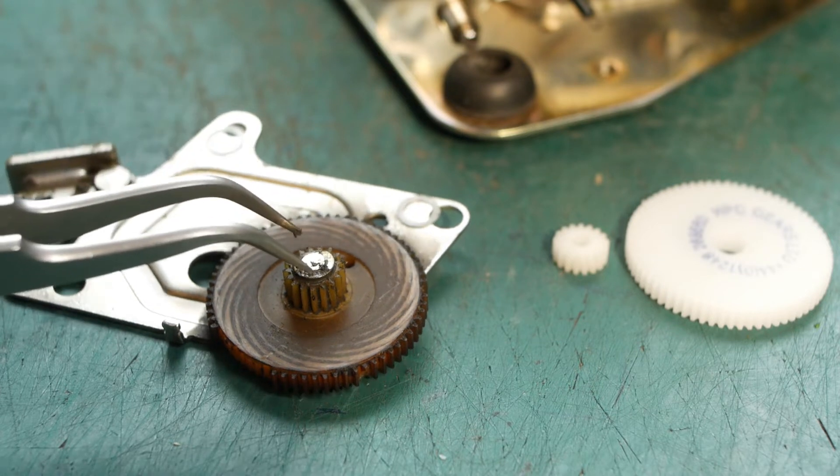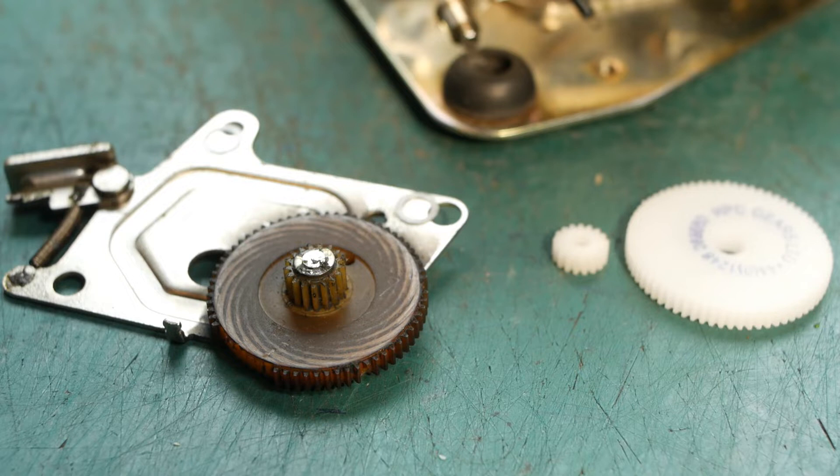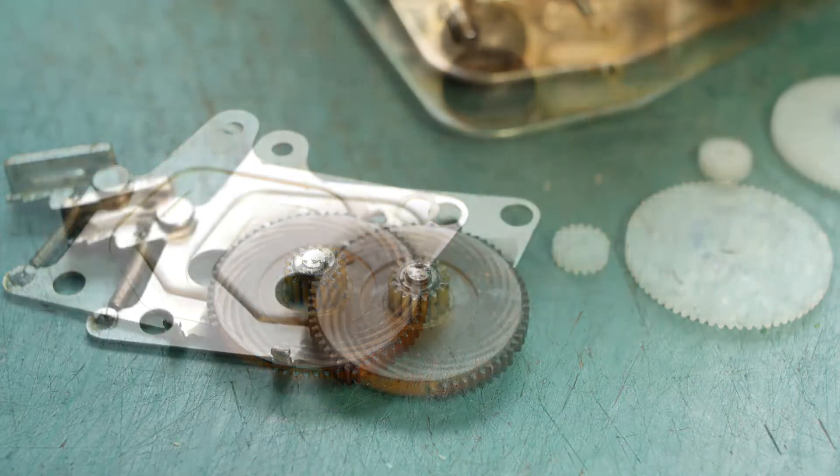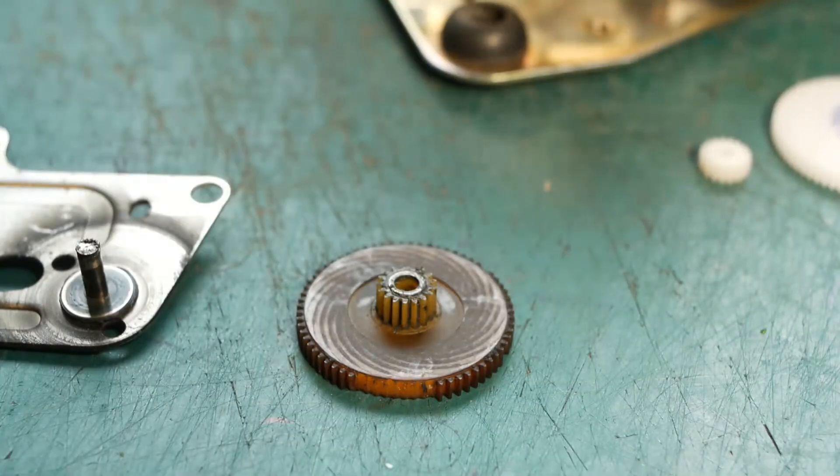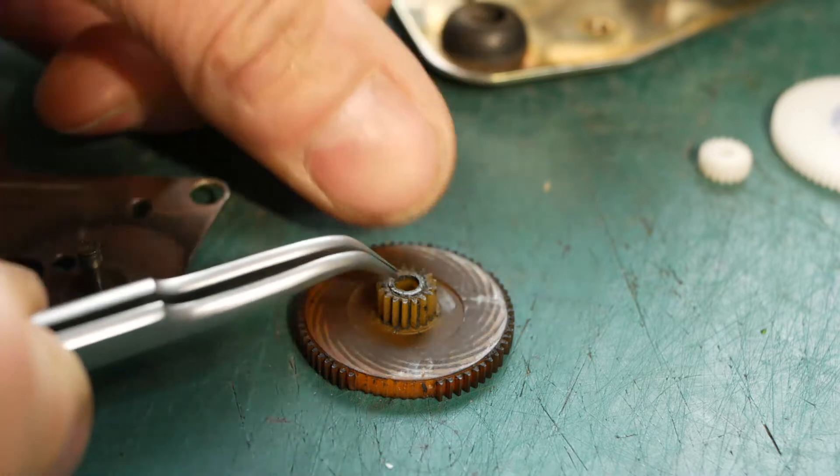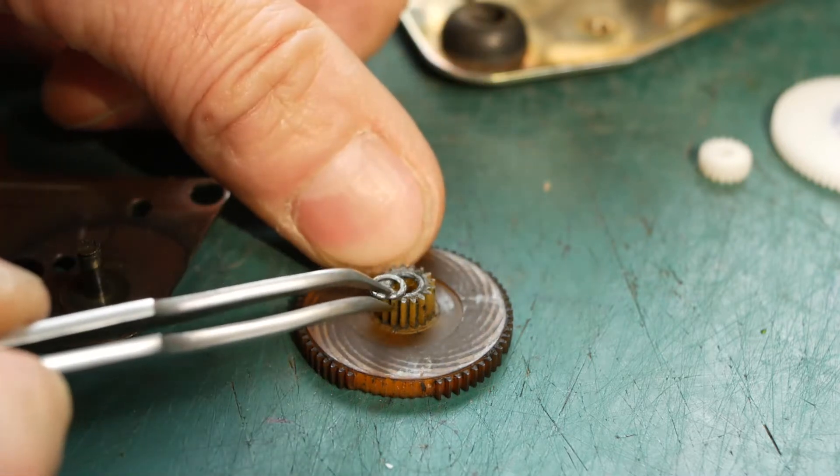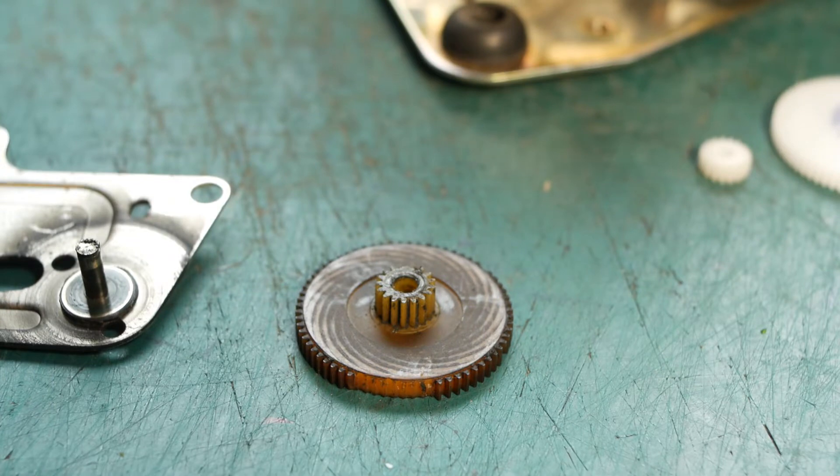And there's a C-clip holding the offending gear in place, so I'll remove that off camera to save the inevitable hassle of it flying off somewhere in the room never to be seen again. Okay, inevitable C-clip disaster averted, and we now have the damaged gear off and ready to replicate. There's a washer between the gear and the C-clip, so I'll put that to one side so I don't lose it.